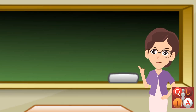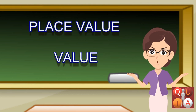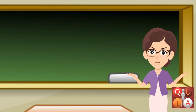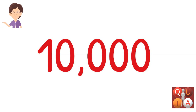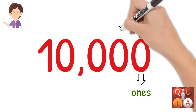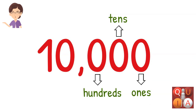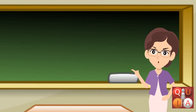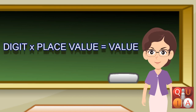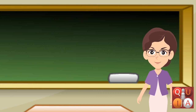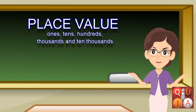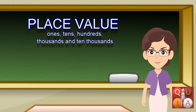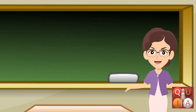Before we continue our lesson, let me clarify some things. Many students are confused between place value and value. When place value is asked, your answer will only be ones, tens, hundreds, thousands, or ten thousands. Start counting from the right: the first number from the right is in the ones place, the second is in the tens place, the third is in the hundreds place, the fourth is in the thousands place, and the fifth is in the ten thousands place. Always remember this place value chart. If what is asked is the value of a number, use the formula: digit times place value equals value. For numbers up to 10,000, the place values are ones, tens, hundreds, thousands, and ten thousands. Let's try what you learned.